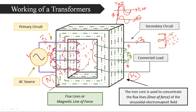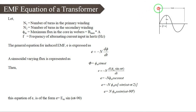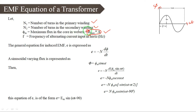Now we will derive how much EMF is induced in the secondary winding. We have the flux waveform with respect to ωt — an alternating waveform. Let N1 be the number of turns in the primary winding, N2 the number of turns in the secondary winding, and φm the maximum flux in the core, where φm = Bm × A (Bm is the maximum flux density, A is the area of the core). F is the input frequency in hertz. From Faraday's second law, induced EMF = −N × dφ/dt.